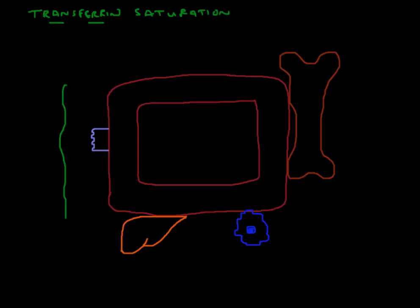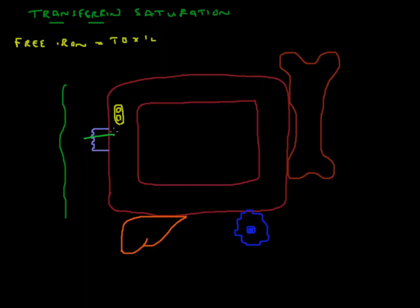Transferrin is the molecule that transports iron around the body, and this is important because free iron is toxic. We do not want any free iron in the circulation because it would potentially damage cells. Transferrin is a molecule with two seats or binding spots for iron and would carry any iron that comes into the bloodstream from the duodenal cell. Either one or two seats can be taken up on the transferrin molecule.